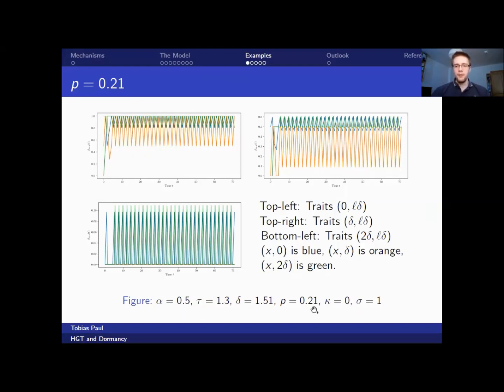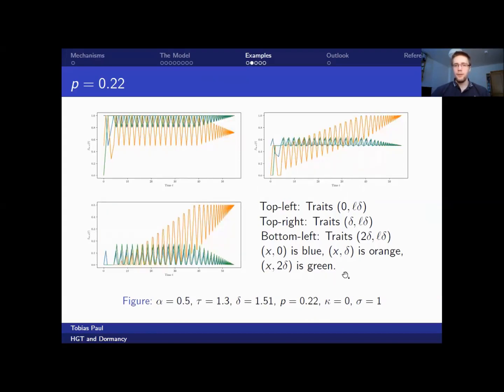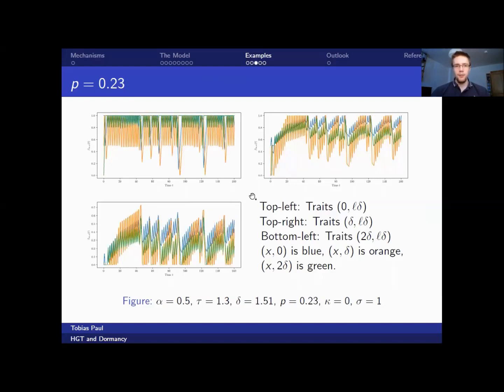However, increasing the strength of the dormancy parameter p by 0.01 shows a very different behavior where we get into an approximate coexistence regime between two traits which cannot become dormant and one trait which can become dormant. Further increasing the dormancy parameter changes this behavior drastically, where we get into a non-cyclic behavior, which is due to the other dormancy traits except for delta delta being fit as well and reaching the exponent one.